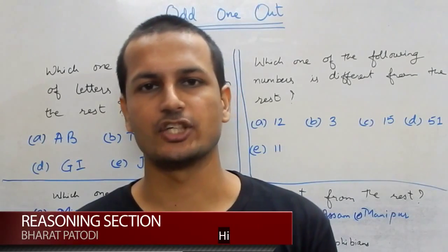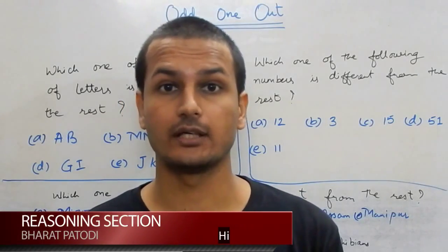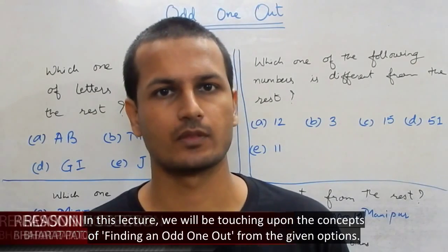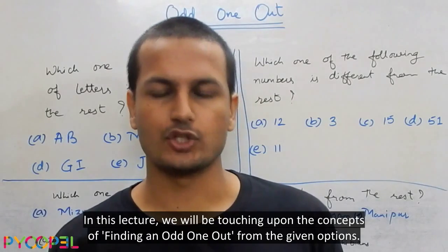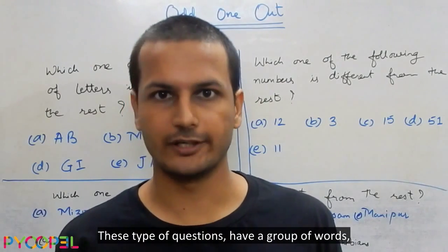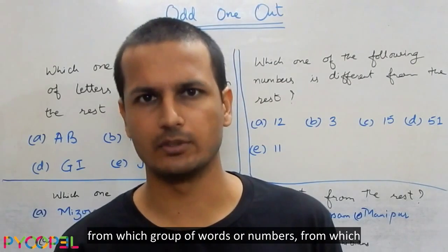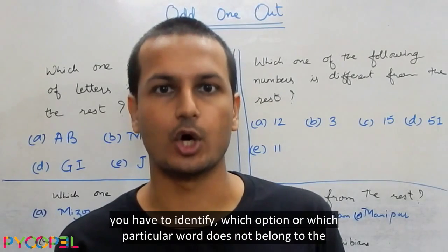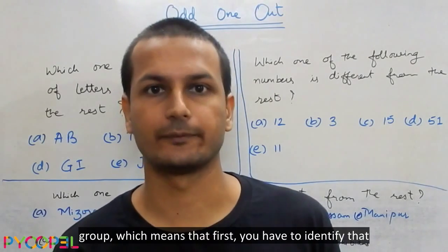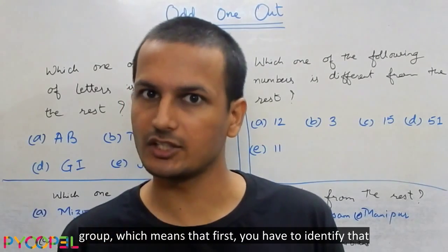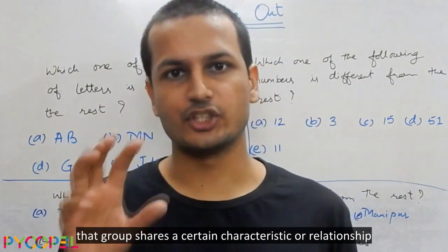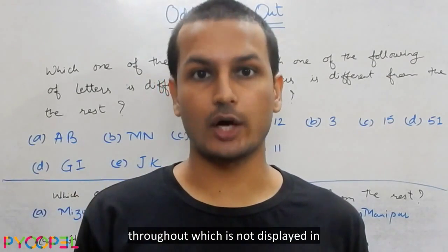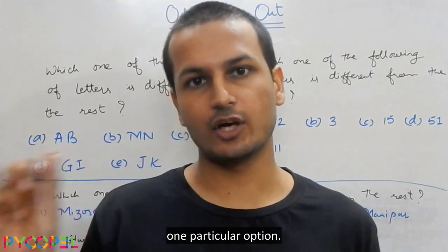In this lecture, we will be touching upon the concepts of finding an odd one out from the given options. These types of questions have a group of words or numbers from which you have to identify which option does not belong to the group. You have to identify that the group shares a certain characteristic or relationship throughout, which is not displayed in one particular option.